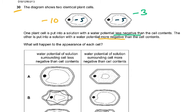Looking at question 30, the diagram shows two identical plant cells. One plant is put into a solution with a water potential less negative. So its inside is minus 5, outside is minus 3. Always put some figures. I've added these figures to it. This was not in the question. And the other is put in a solution with a water potential more negative. So inside is minus 5, outside is minus 10. Please understand this was not in the question. I've added this minus 5 and minus 10.